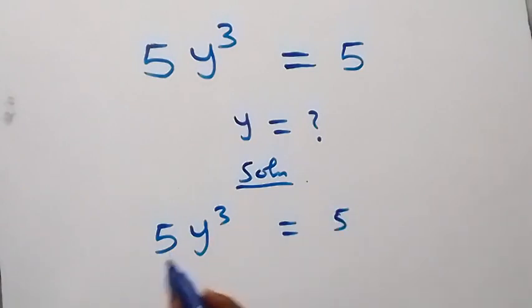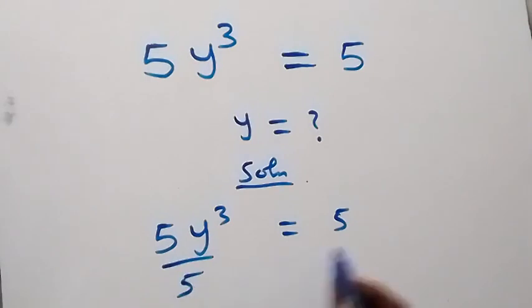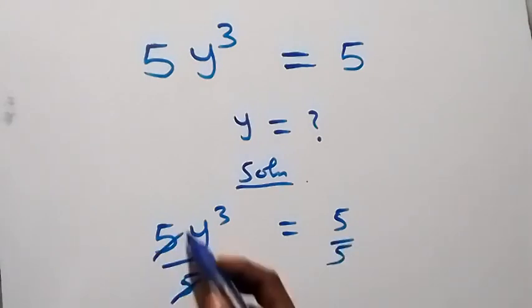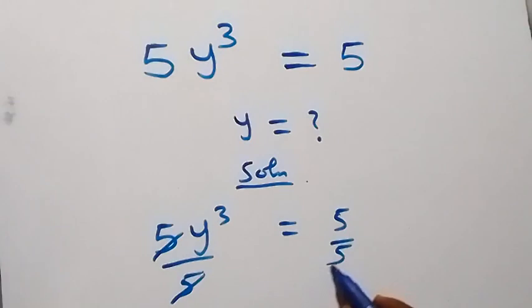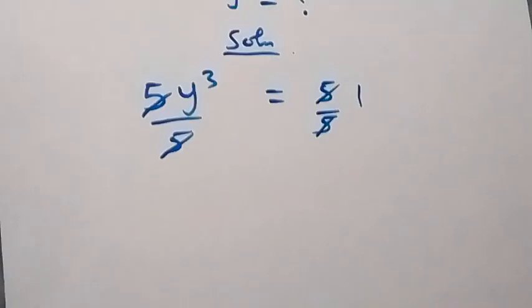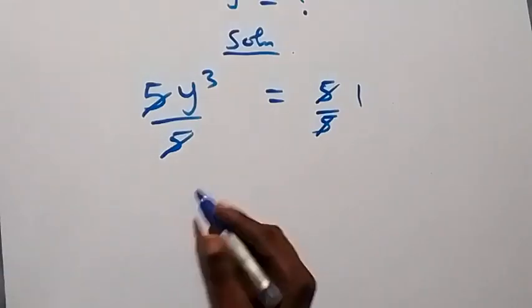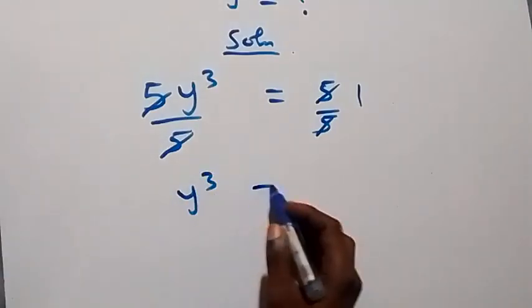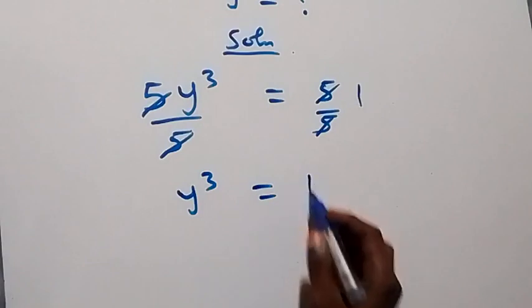Here, to remove this 5, we can divide both sides by 5. We divide this side by 5, so 5 here cancels out, and 5 here cancels out — we have 1. Then this becomes y raised to power 3 equals to 1.